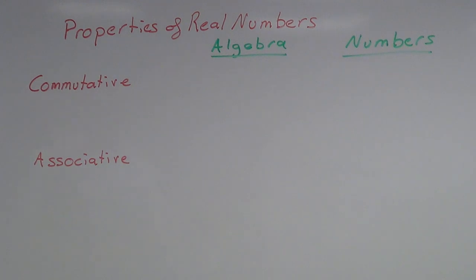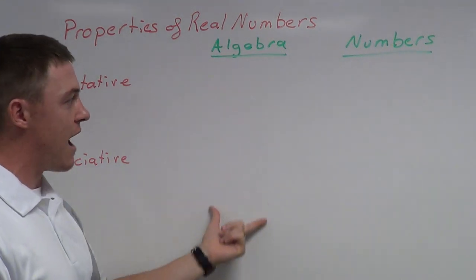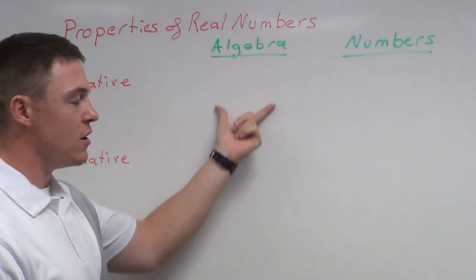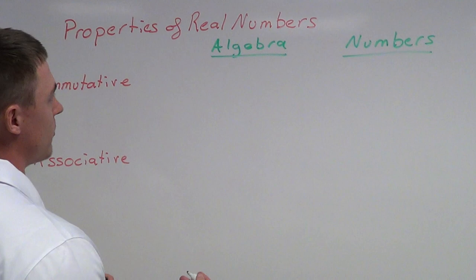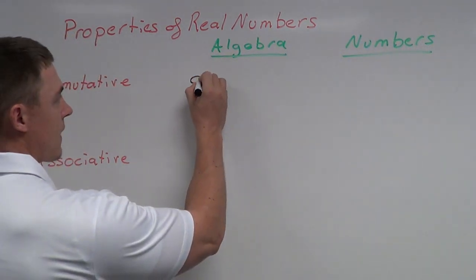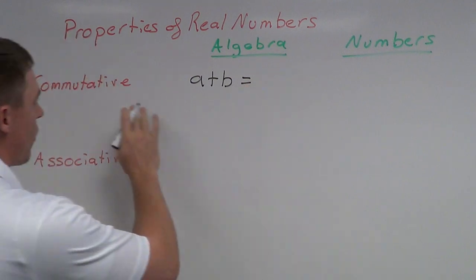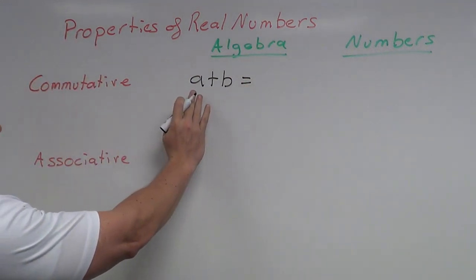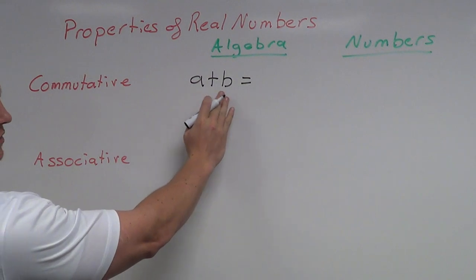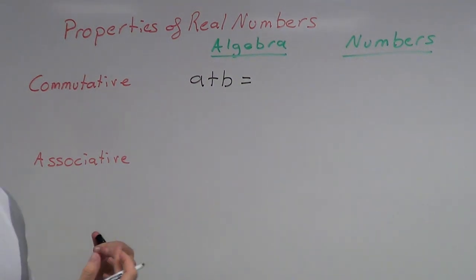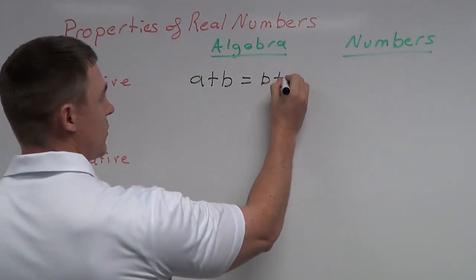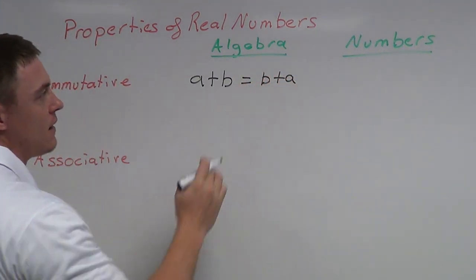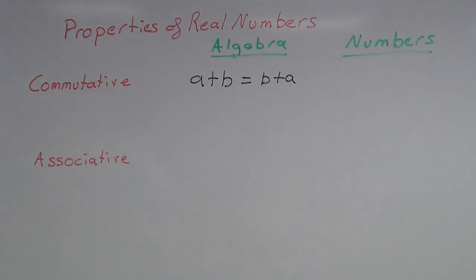For the algebra portion, I'll show the commutative property of addition first. Let's use some random variables — something simple. A plus B: according to the commutative property, if I have a number plus another number, it doesn't matter what order I add them in. So I can switch these up and say B plus A is also going to give me the same result. That's the commutative property of addition.